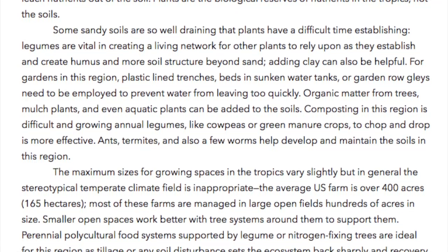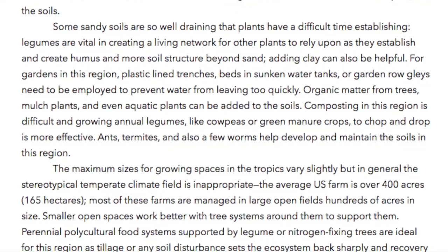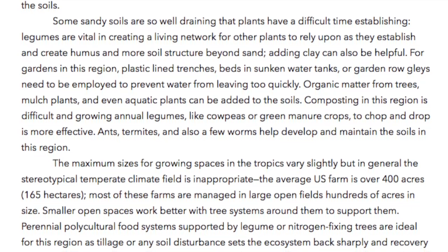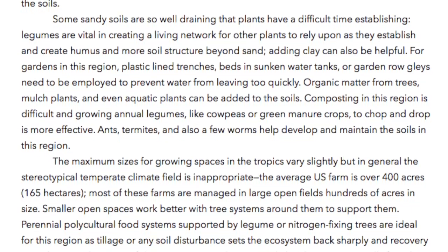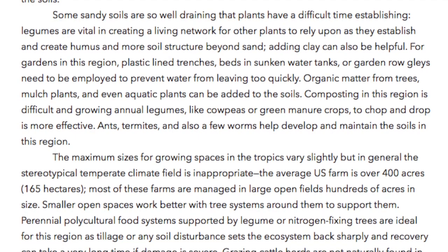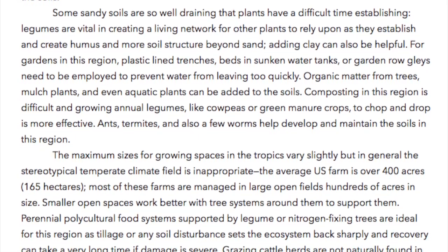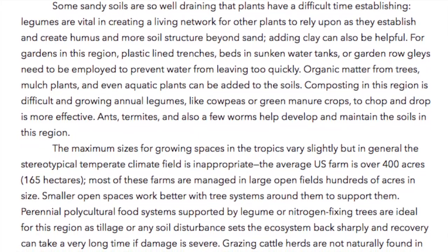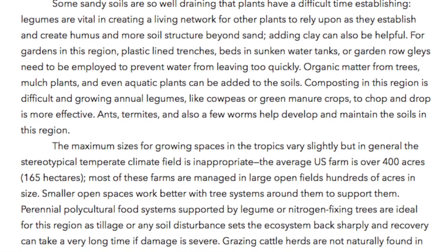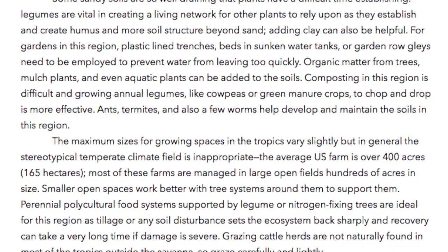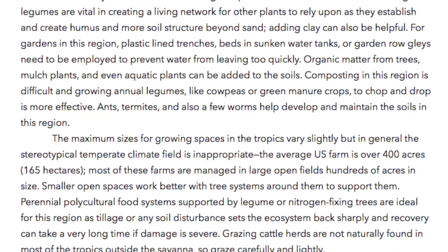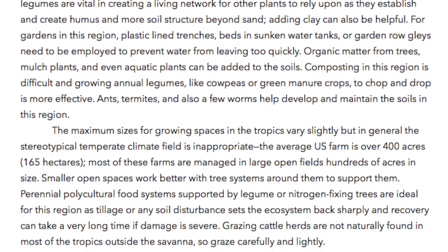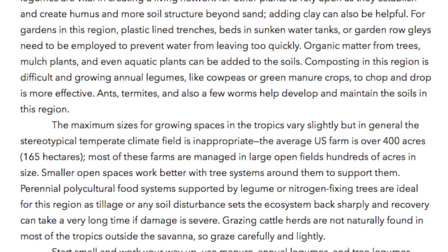For gardens in this region, plastic-lined trenches, beds in sunken water tanks, or garden row glaze need to be employed to prevent water from leaving too quickly. Organic matter from trees, mulch plants, and even aquatic plants can be added to the soils. Composting in this region is difficult, and growing annual legumes like cowpeas or green manure crops to chop and drop is more effective.